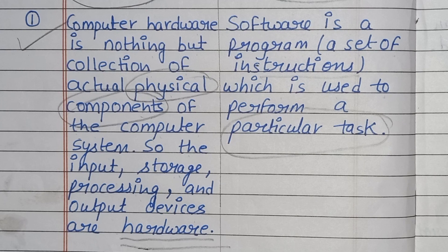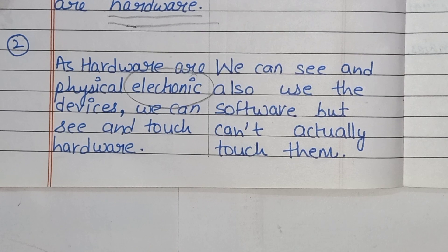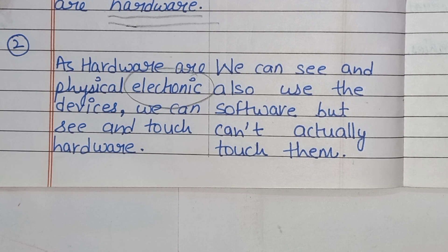So hardware ek collection hai physical components ka computer system ke — input, storage, processing, and output devices. Software ek set of instructions hai jiska hum use karte hai to perform a particular task. Hardware are physical electronic devices — we can see and touch hardware. We can see and also use the software, but we can't actually touch them. Jise hum touch kar sakti hai, woh hai hardware; jise touch nahi kar sakti hai, woh hai software.